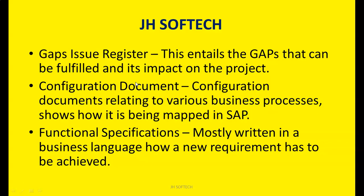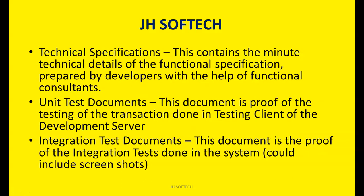The Technical Specification document contains the minute technical details of the functional specification and is prepared by developers with the help of functional consultants. For the same sales order example, the technical specification would say: 'use the VBAK table and get the VBELN field.' The functional team prepares the functional specification and hands it over to the technical team, who then develop the technical specification.